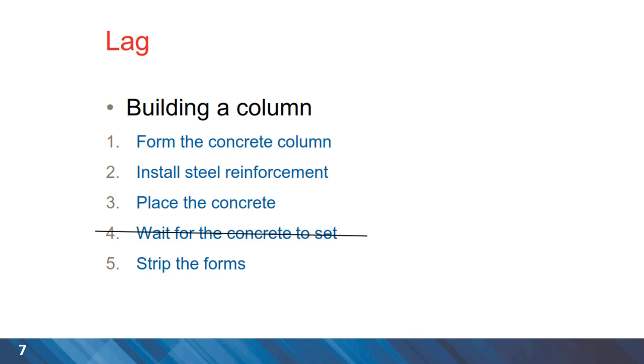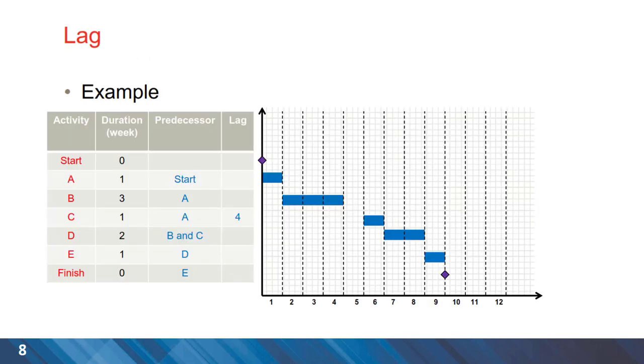So we can illustrate this on a Gantt chart. And obviously we have the start milestone after that activity A with the duration of one week. Then activity B starting immediately after A. However, activity C, which has activity A as the prerequisite, has a lag of four. It means that we need to wait for four days after finishing activity A and then activity C can be started.